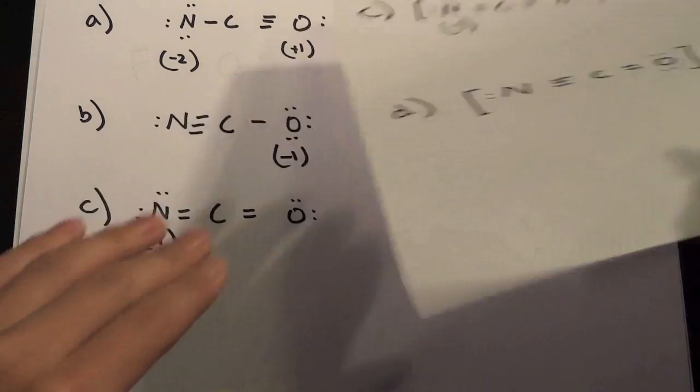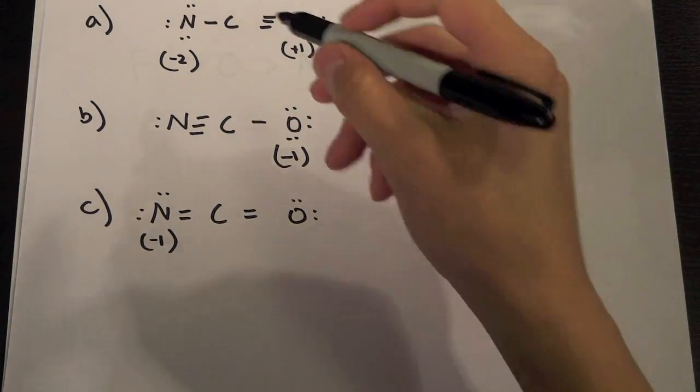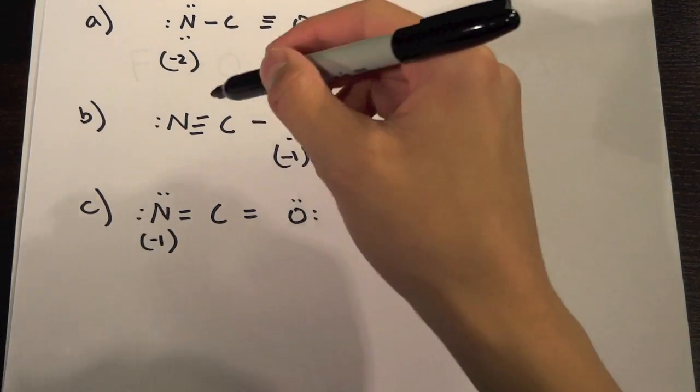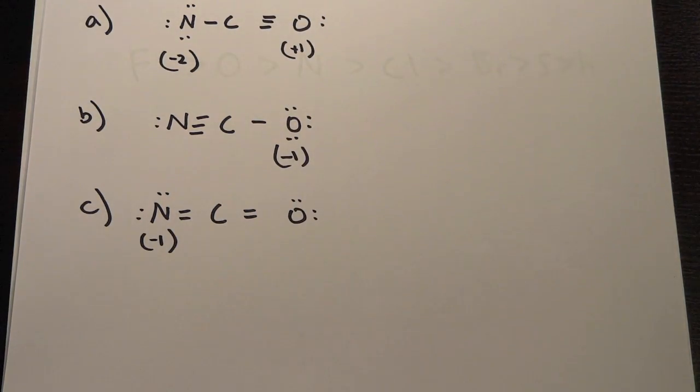And D we eliminated before because it didn't follow the octet rule. So now we have these three right here and we have negative two, plus one, minus one, minus one, and we see that all of them should always add up to negative one because that's our net charge of CON minus.